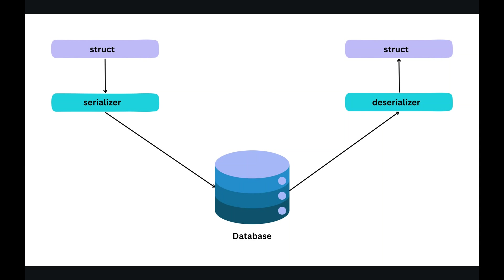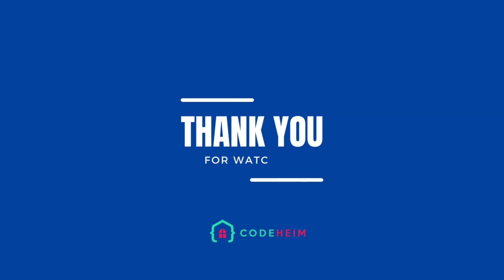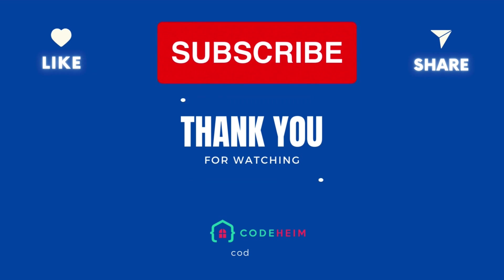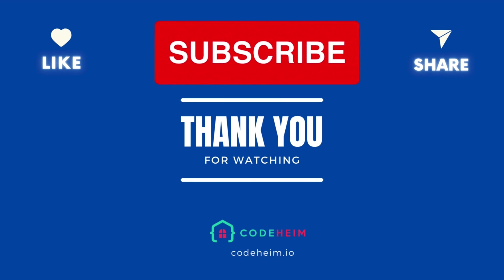And that's it. We've just learned how to work with serializers in GORM. Serialization allows us to store complex data types such as slices and maps in your database fields. This feature can be especially useful when dealing with structured or nested data. If you found this tutorial helpful, don't forget to like, subscribe, and leave any questions or comments below. Thanks for watching and happy coding!